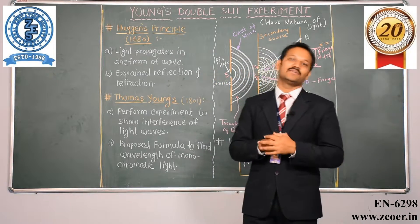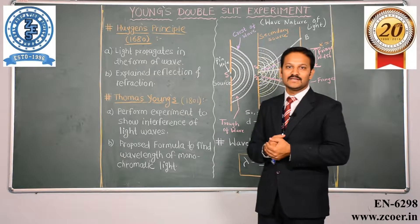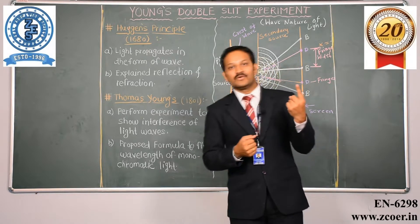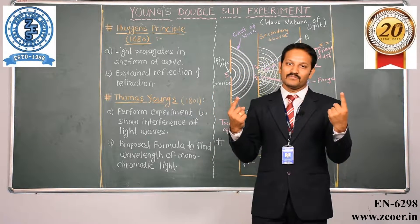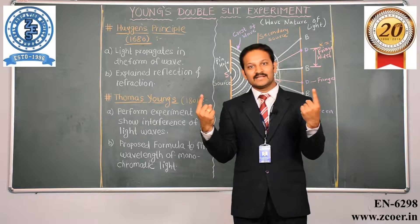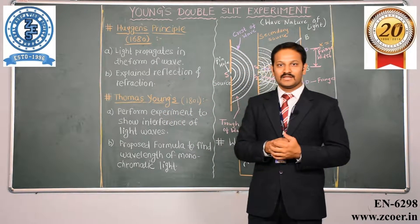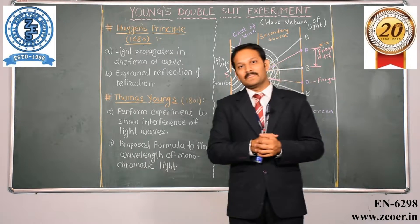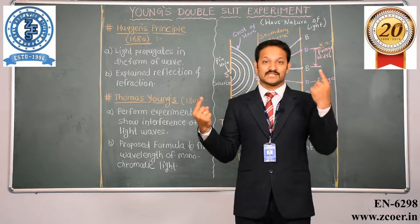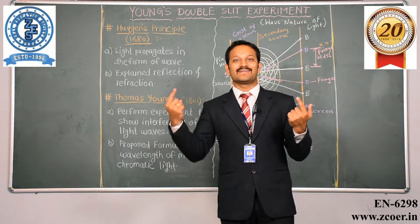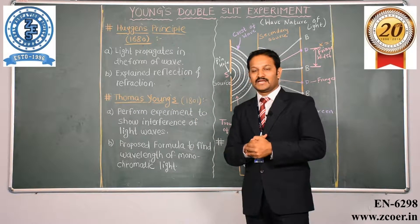One is constructive interference and second is destructive interference. What is constructive interference? When the crest of one wave overlaps with the crest of another wave, or when the trough of one wave overlaps with the trough of another wave, then we may say that there is constructive interference. What is destructive interference? When the crest of one wave overlaps with the trough of another wave, or the trough of one wave overlaps with the crest of another wave, then we may say there is destructive interference.